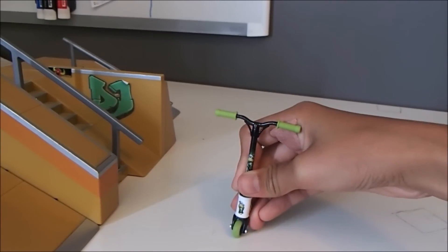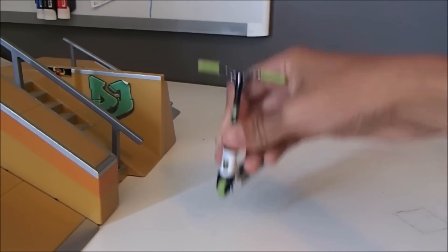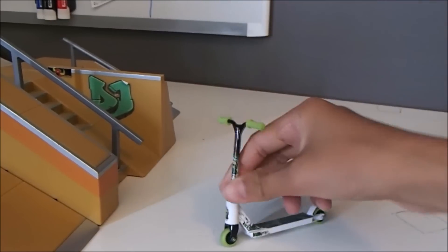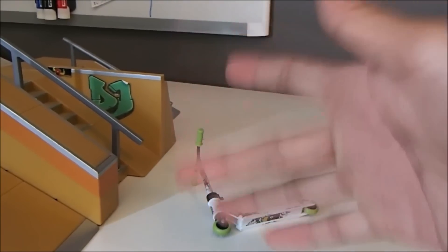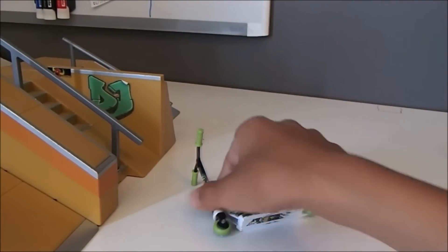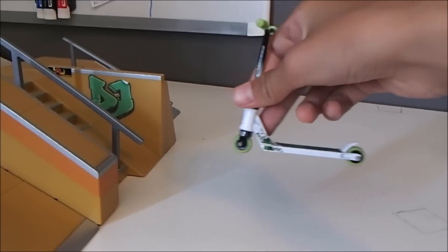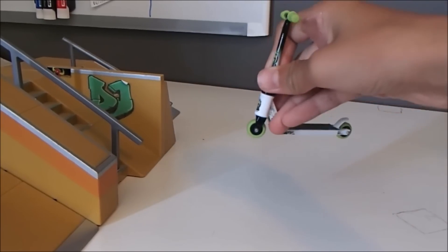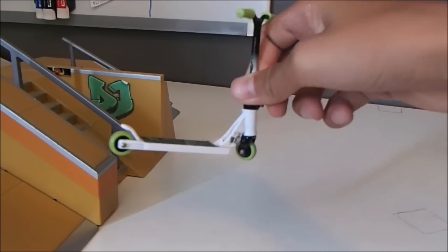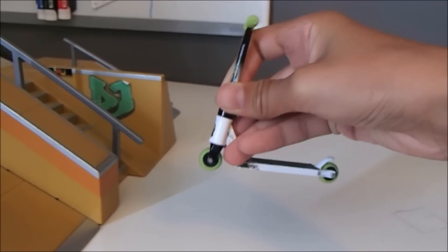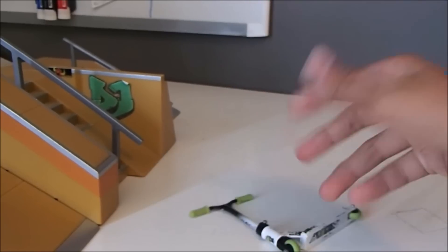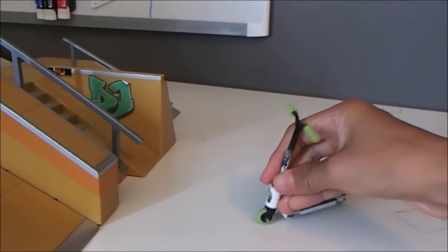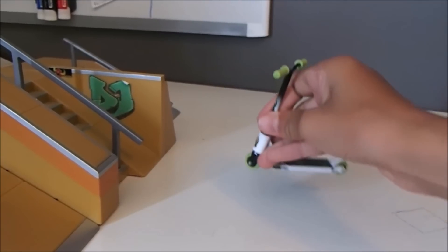Okay, so to do a tail whip, what you want to do is first practice lifting up your scooter, just like the bunny hop. Then you want to get your middle finger, which is this one right here, and use it to flick the deck around. Alright, you want to get used to flicking the deck around, then the next step is to catch - so flick and then catch it with your middle and ring finger. So it should look like this: you do the bunny hop, then you flick and you catch.